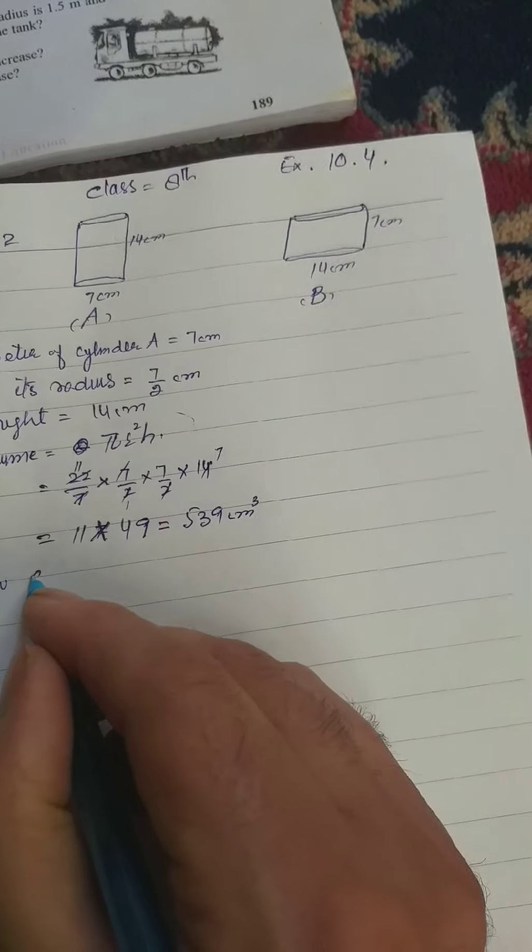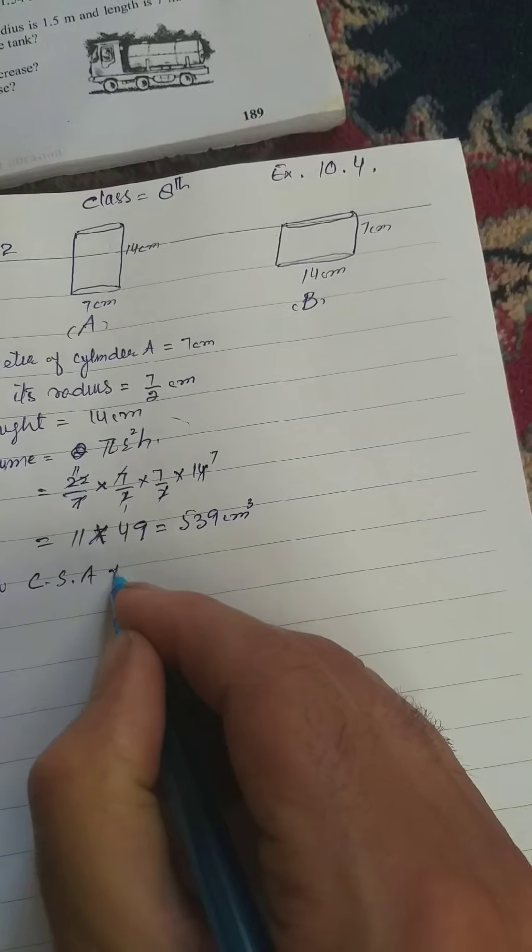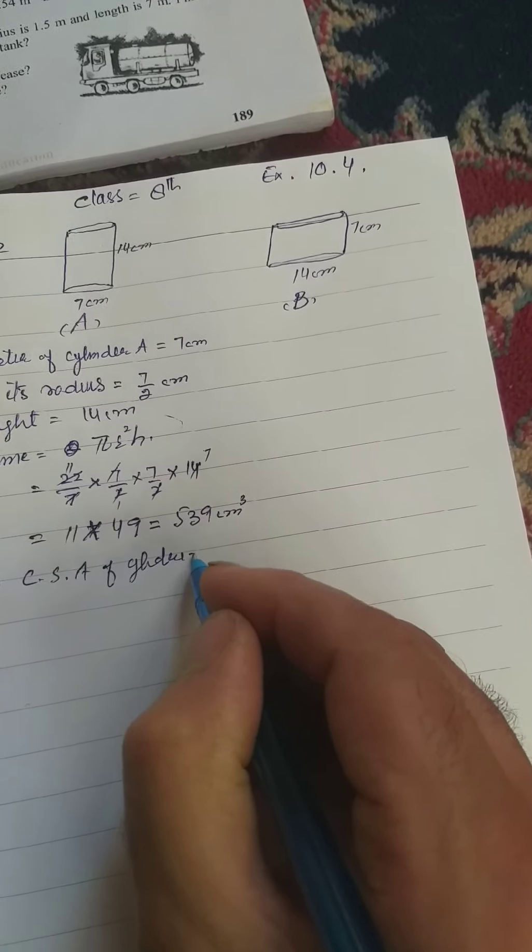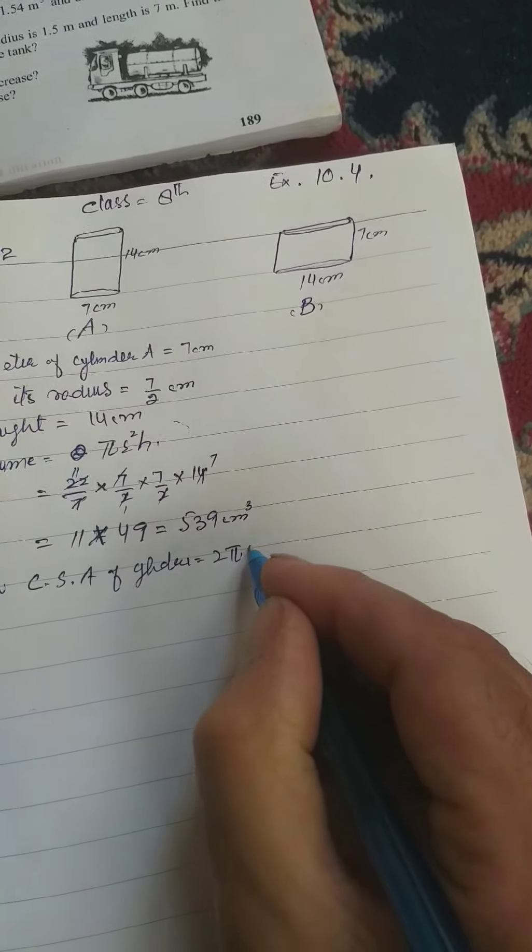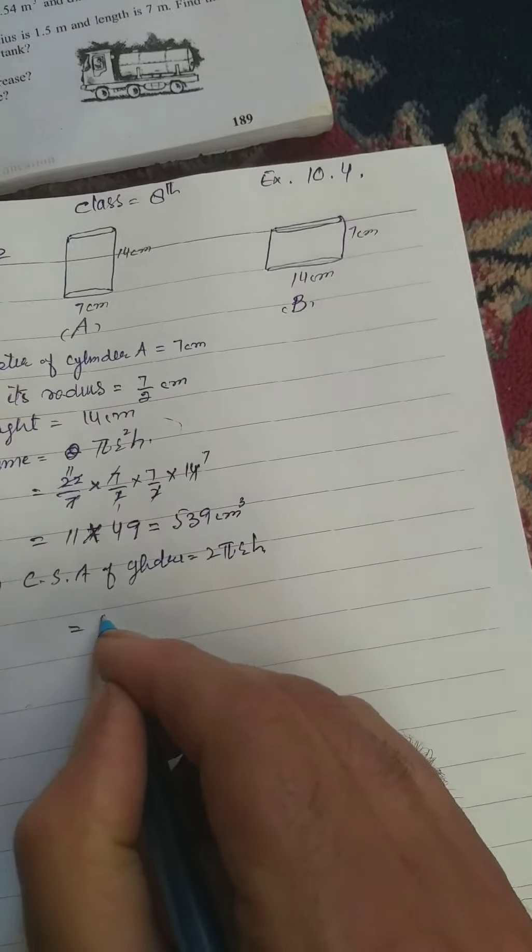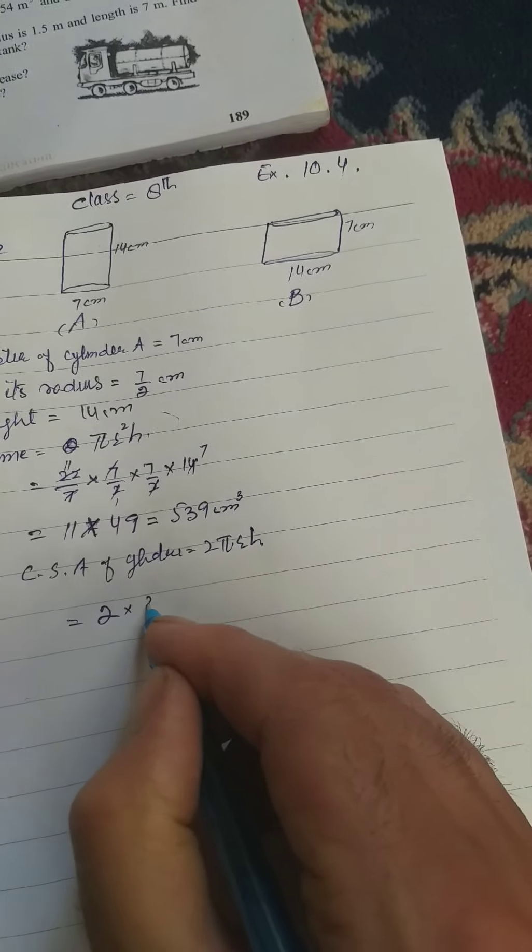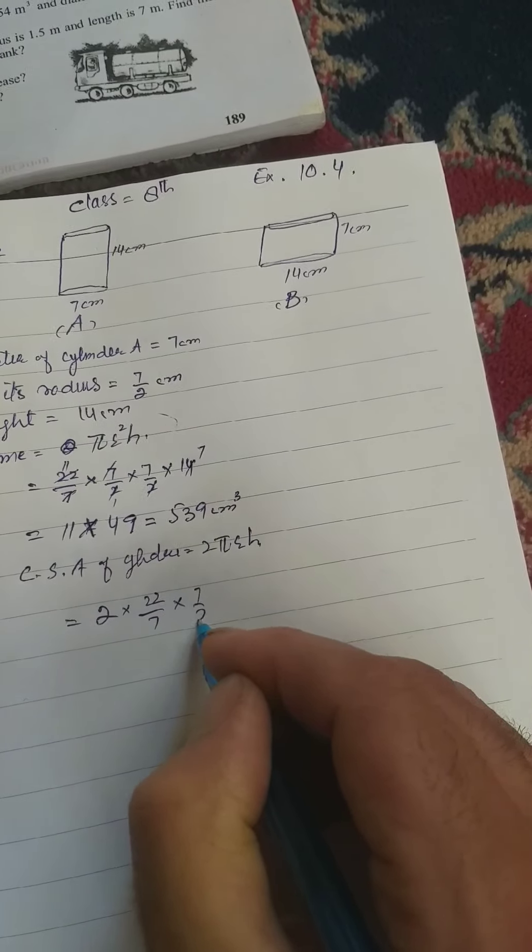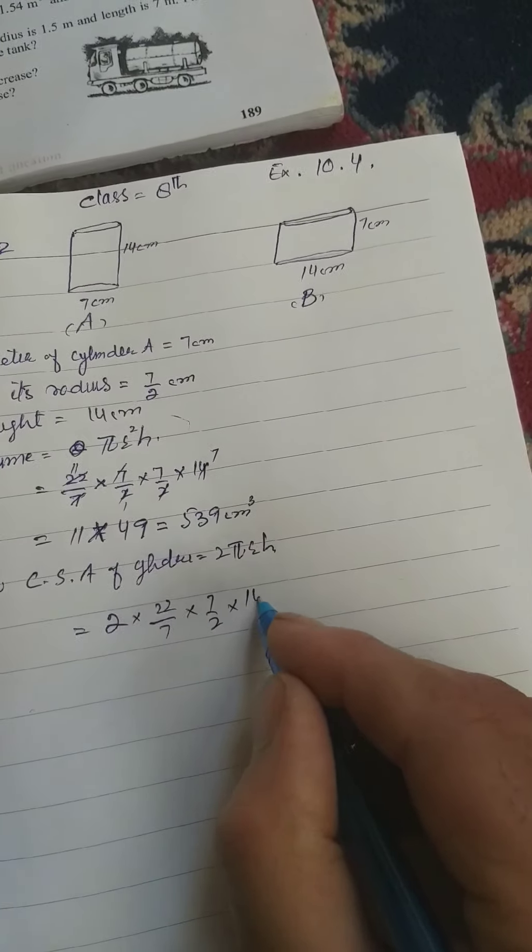So now, curved surface area of cylinder A is 2πrh where π is equal to 22 divided by 7, r is 7 by 2, and h is 14 centimeter.